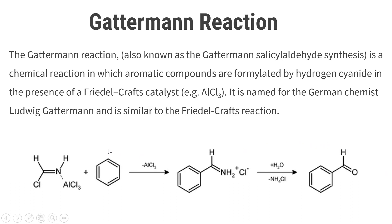This is your aromatic compound — benzene. This is your HCN, which is formylated, in the presence of AlCl3. So this is your product. The N is removed and your final product is benzaldehyde. So now we have to study this in detail.